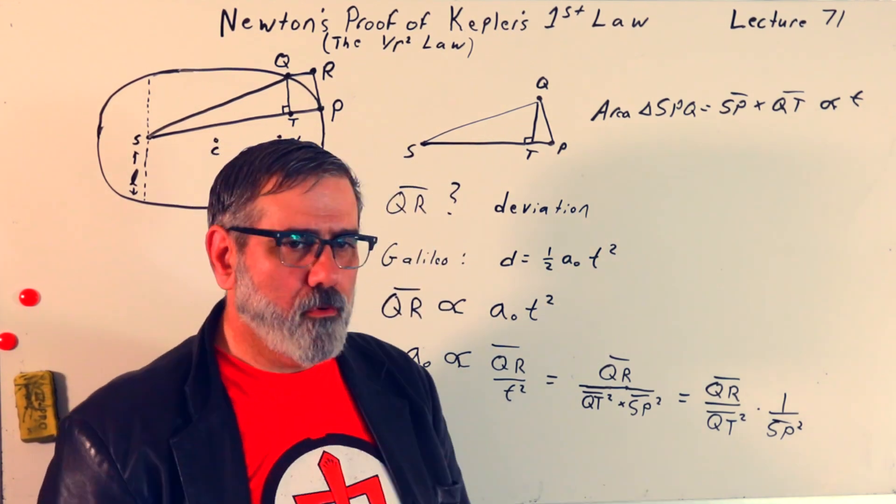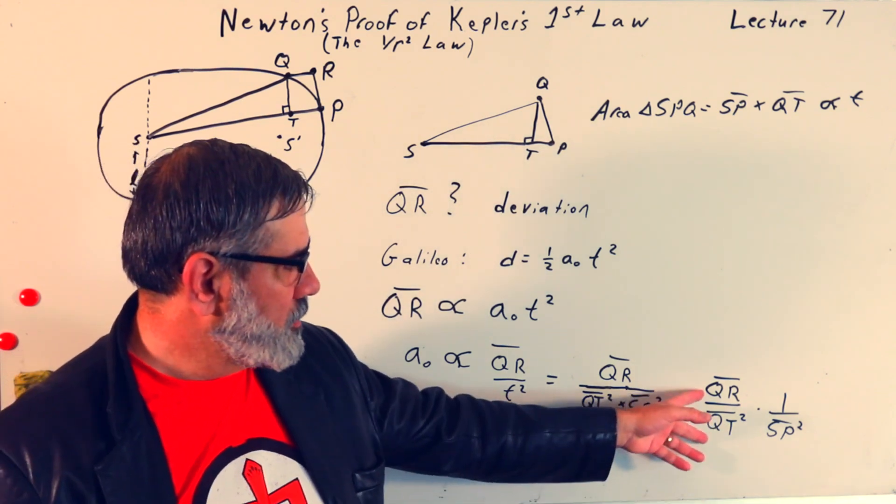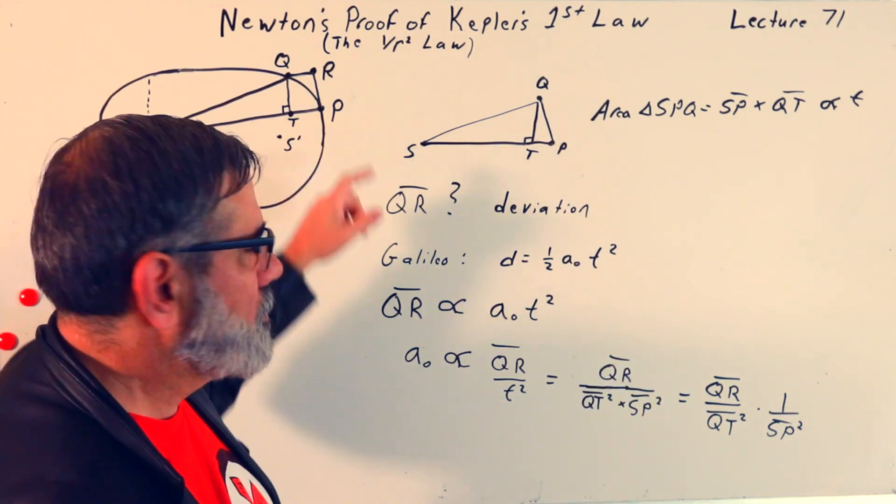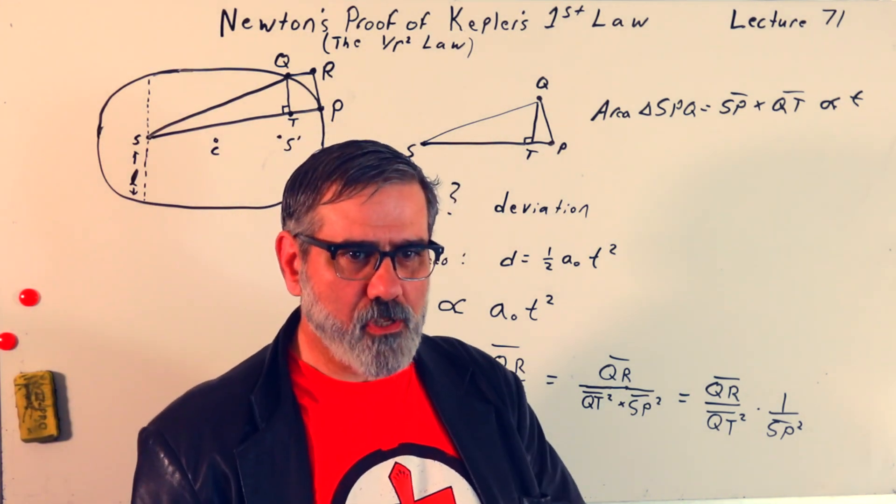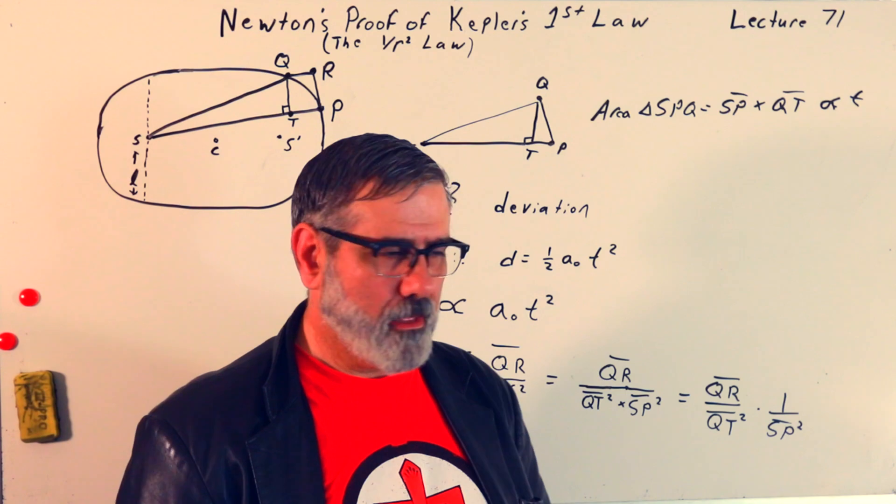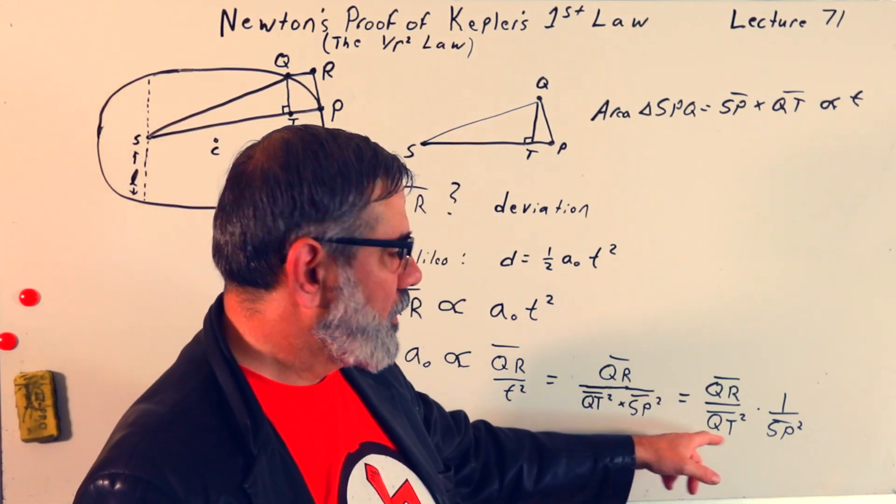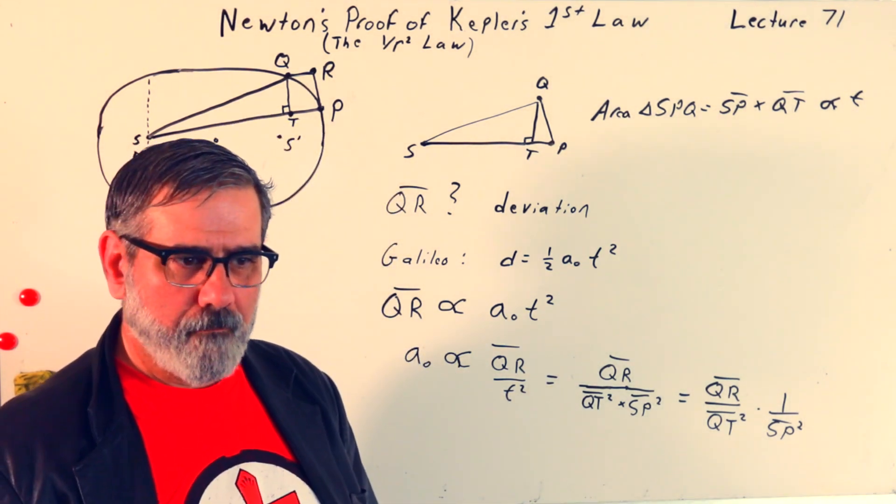So, this is what we need to focus on. And, in particular, just to get ahead of ourselves, QR over QT squared times 1 over SP squared. This is QR over QT squared is what we'll have to hunt down and see how the geometry changes that. SP, that's just the distance from the force center to the planet. So, that's the distance of, say, the Earth from the sun.